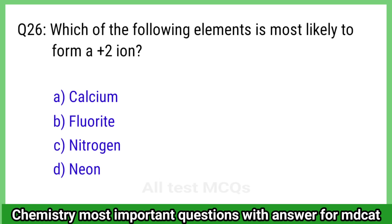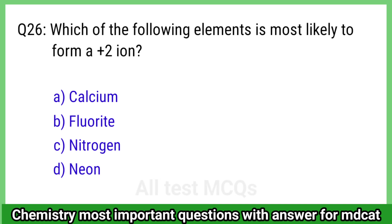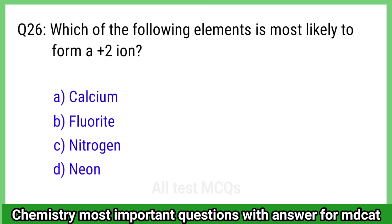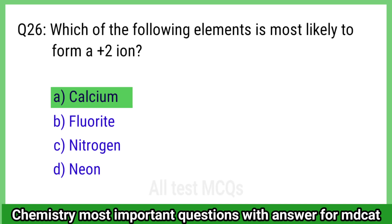Question 26: Which of the following is an alkaline earth metal? The right answer is option A, calcium.